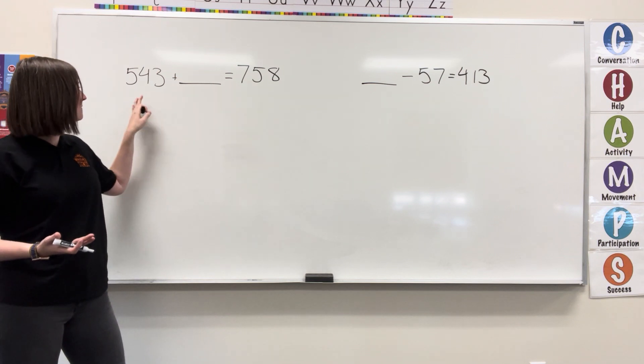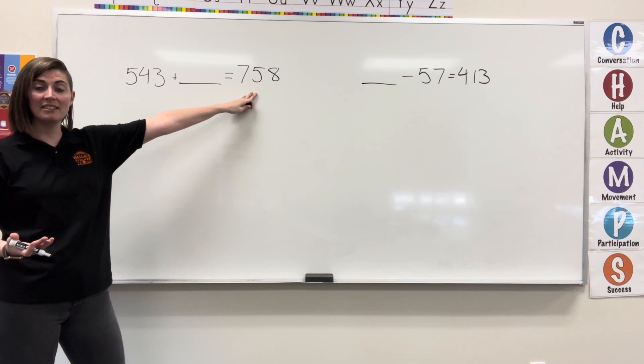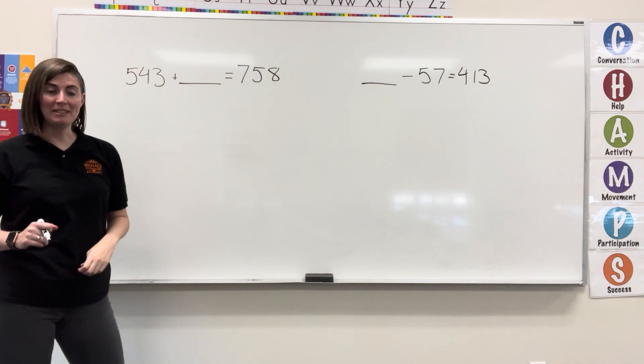Here we have 543 plus something equals 758. If we're adding here, I'm going to use subtraction to find that missing value.